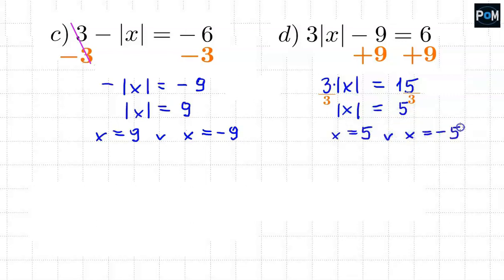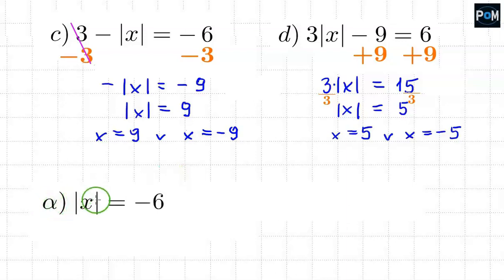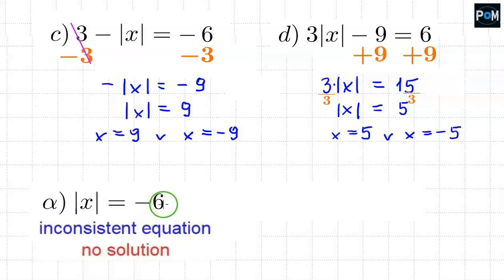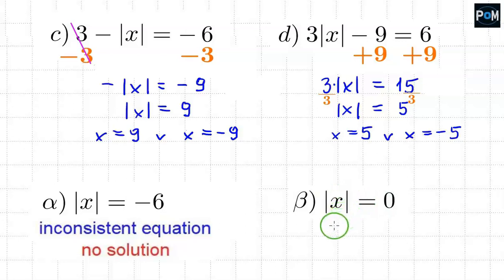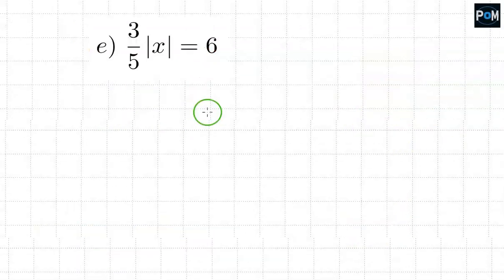So far, we've come up with two solutions. But there are examples of absolute values that require special attention. For example, the absolute value of x equals negative 6. The absolute value always gives a positive result, so the absolute value of x will never be equal to negative 6. Such an equation is an inconsistent equation — there is no solution. The second special case is the absolute value of x equals 0. There's only one case: x can be 0. Only in this one case does the absolute value result in 0, so there is only one solution.